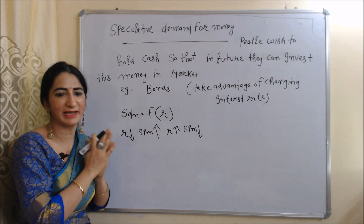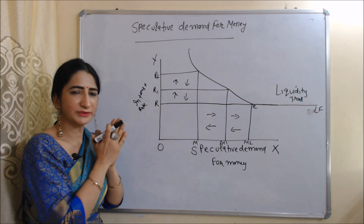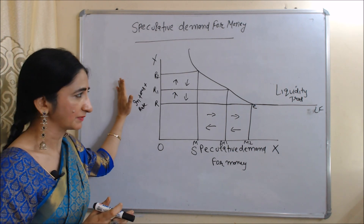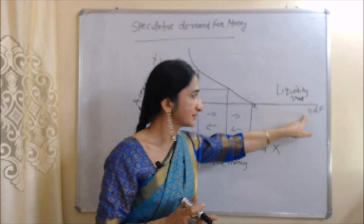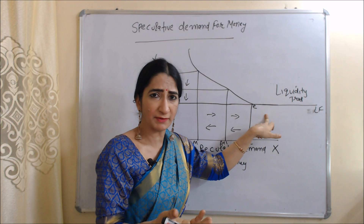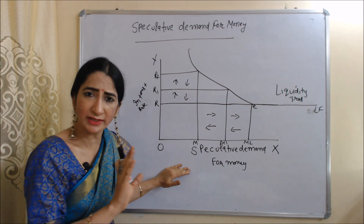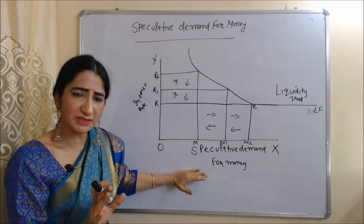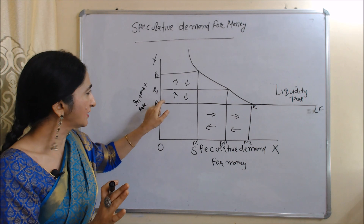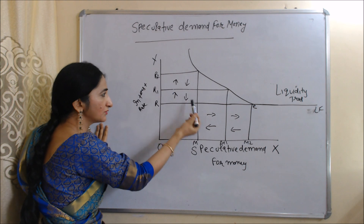Now we will understand the concept of speculative demand for money and the liquidity trap with the help of a diagram. On the x-axis we have speculative demand for money, and on the y-axis we have interest rate. The LF curve represents liquidity preference — how much money people wish to hold for speculative motive. As we know, interest rate and speculative demand for money have an inverse relation: when interest rate is high, speculative demand is low; when interest rate is low, speculative demand is high.